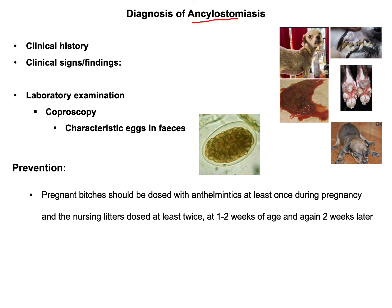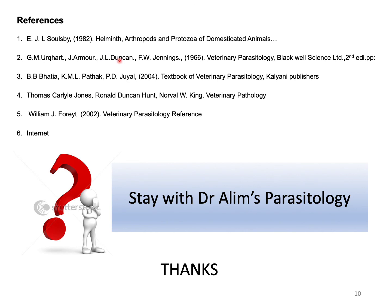For diagnosis of Ancylostomiasis, clinical history and clinical signs should be carefully evaluated. To confirm Ancylostoma caninum infection, coproscopy should be performed to identify characteristic eggs. For prevention, pregnant bitches should be dosed with anthelmintics at least once during pregnancy. For nursing mothers and newborn puppies, dosing should occur at least twice: immediately after birth within one to two weeks of parturition, and again two weeks after the first dose.